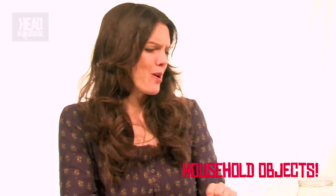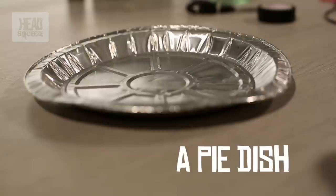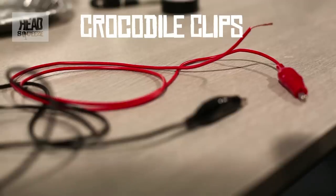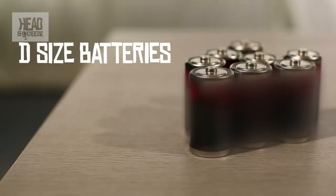We're going to be making a light bulb using household objects. It's not your ordinary light bulb, but what you'll need is a pie dish, a jar, a medium-sized jar, some crocodile clips with wires attached, a rather large bulldog clip, D-sized batteries, eight of them,